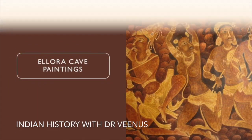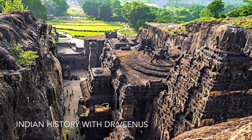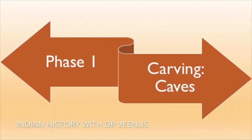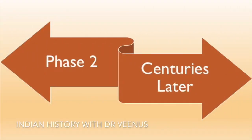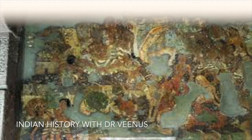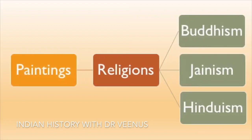Mural paintings at Ellora Caves are found in five caves, mostly limited to Cave 16 — the Kailash Temple. These murals were done in two phases: the first during the carving of the caves, the second several centuries later. The earlier paintings show Vishnu with his consort Lakshmi borne through the clouds by Garuda. The later paintings, made in Gujarati style, depict a procession of a holy man. The paintings relate to all three religions — Buddhism, Jainism and Hinduism.